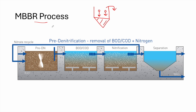After this mandatory primary treatment step, the wastewater undergoes secondary treatment — in this case, the MBBR process. We have several schemes for the MBBR depending on the desired effluent quality. Here we see a scheme capable of reducing nitrogen and highly removing BOD and COD, starting with a pre-denitrification or anoxic tank using anaerobic conditions and a mixer.